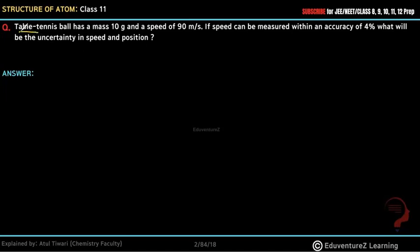Hello everyone. Our question is: table tennis ball has mass 10 grams and speed 90 meter per second. Speed can be measured within accuracy of 4%. What will be the uncertainty in speed and position?